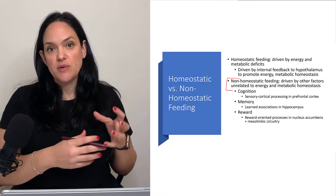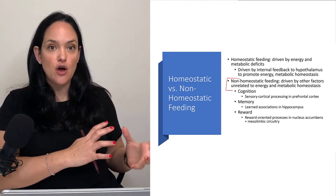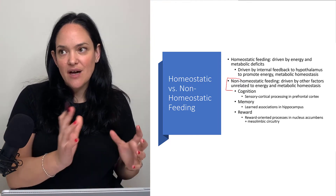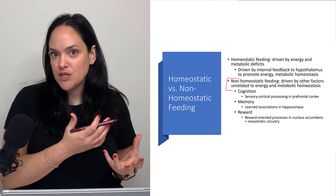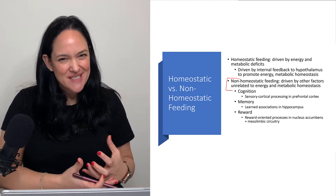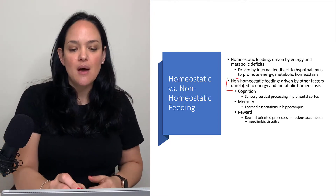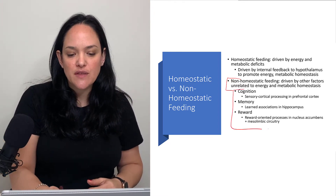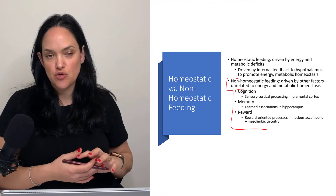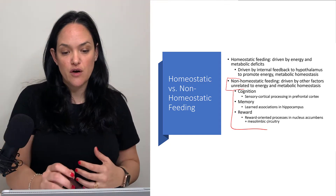Some individuals with obesity also have an upregulation of non-homeostatic feeding. This isn't happening in just one brain region because the brain is highly integrated with lots of communication between different parts. There are three main areas of the brain we're going to focus on with respect to non-homeostatic control of feeding, although there are probably more than what we know so far.